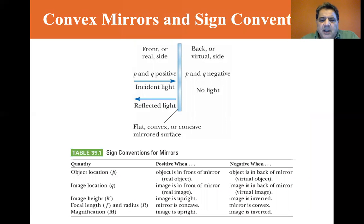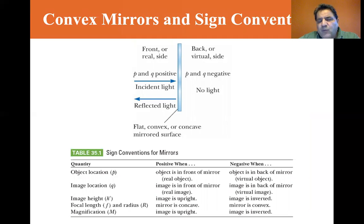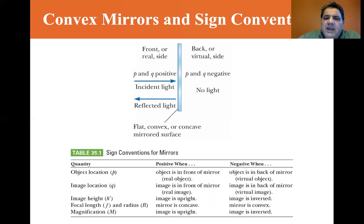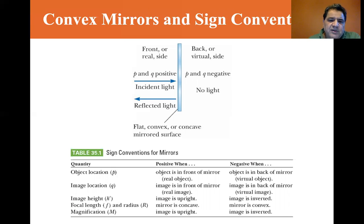The equations for convex and concave mirrors are the same, but there are some things we need to keep straight. There's a front side — the side the light rays come from — the real side. P and Q are positive if they are on the front side. On the back side, or virtual side, P and Q are negative, and there's no light coming from that side.